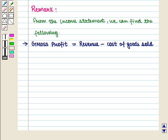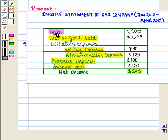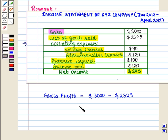Now, gross profit is given by revenue minus cost of goods sold. So here gross profit will be given by $3,000 minus $2,325, which is equal to $675.